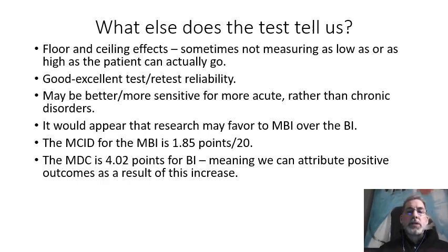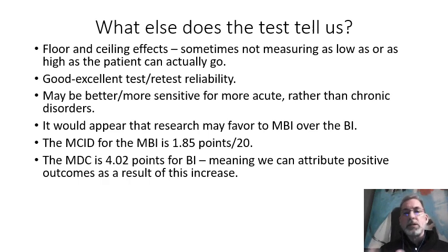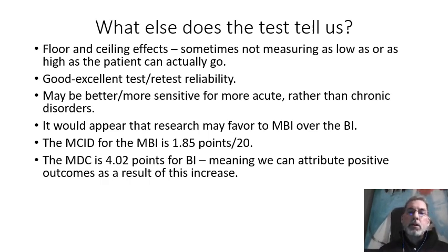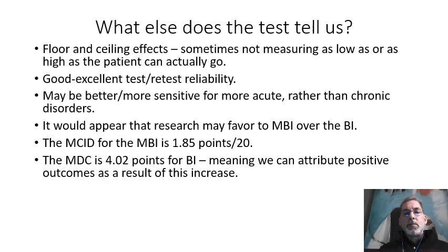The standard Barthel has a Minimal Detectable Change (MDC) measurement associated with it. That is basically an objective measure saying we've exceeded what the standard error of measure should be — meaning this is not just variability in how we did the test, it's actually a true change that demonstrates functional improvement. That MDC is 4.02 points, which you can round to four points. So if you make four points of improvement on the Barthel or higher — generally five, since it's a five-point increment scale — you are truly showing functional improvement, and that's what you want to tell a third-party payer.